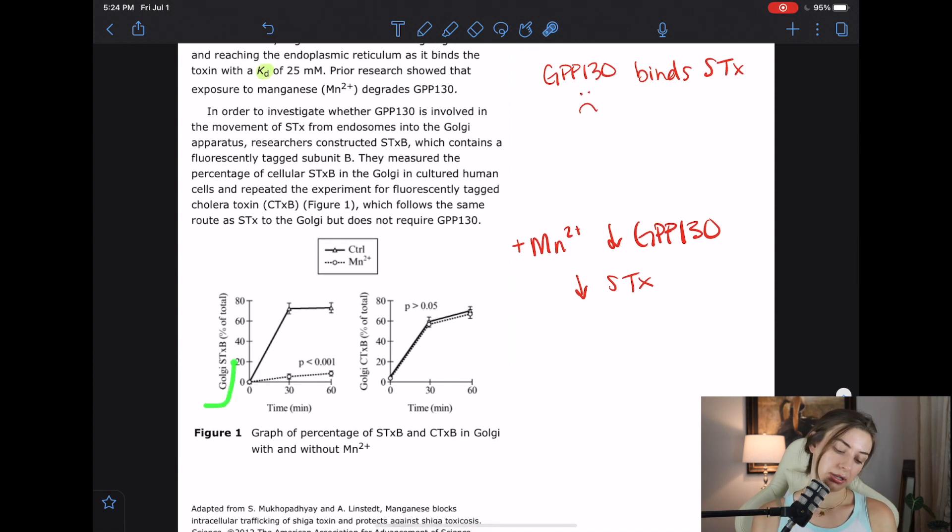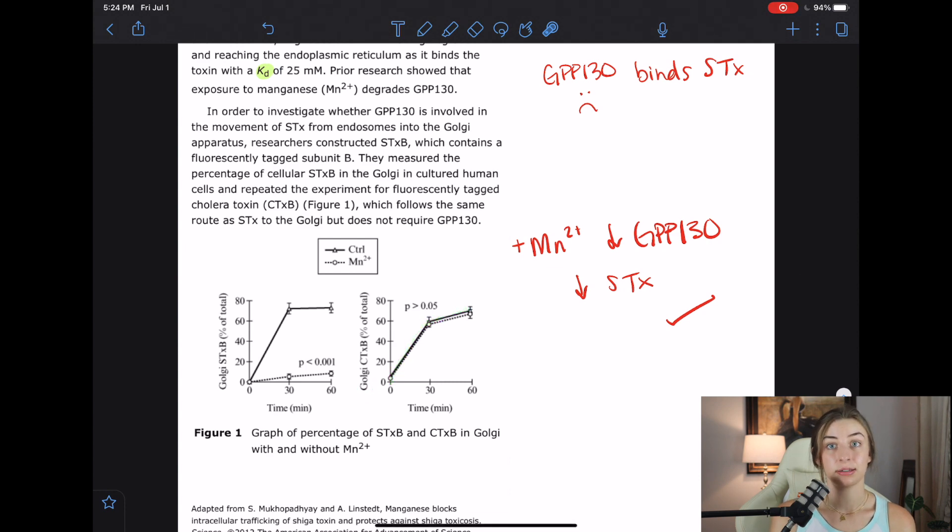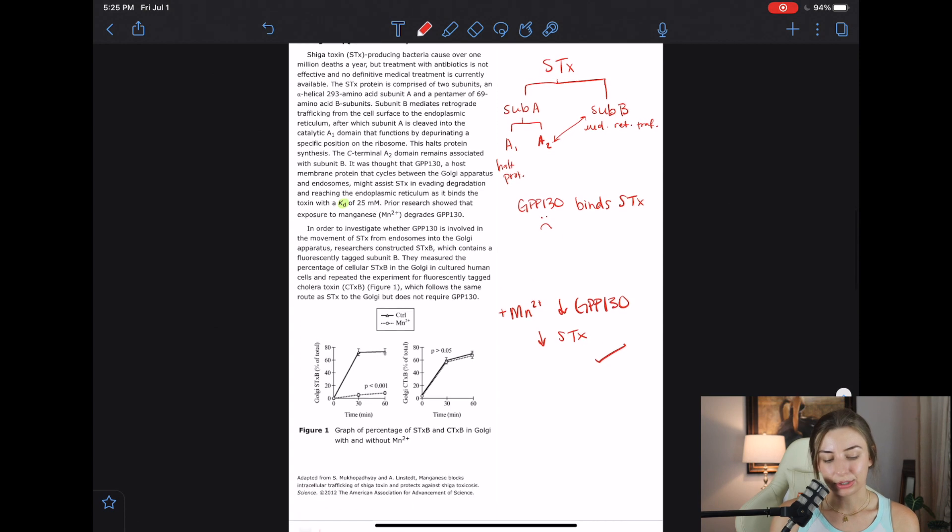So we got Golgi Shiga toxin over time. It looks like the control follows kind of this pattern and looky there, when you add manganese, it definitely decreases the amount of Shiga toxin that we end up seeing in the Golgi. And so it looks like the hypothesis is correct. And we see that it's not just the manganese that's causing some weird result. The manganese actually does have a specific purpose with the GPP-130 and the Shiga toxin because in this kind of control with the cholera toxin, we don't see manganese doing anything. So that's good.